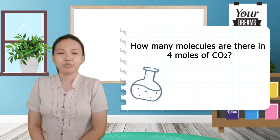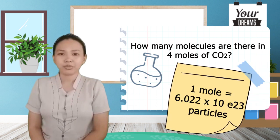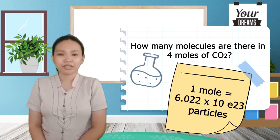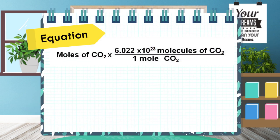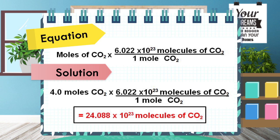Let's use this example: how many molecules are there in 4 moles of carbon dioxide? Remember that 1 mole is equal to 6.022 times 10 to the 23rd power number of particles. We convert the number of moles to the equivalent number of particles using this equation: 4 moles of CO₂ times 6.022 times 10 to the 23rd power divided by 1 mole of CO₂ equals 24.088 times 10 to the 23rd power number of molecules of carbon dioxide.